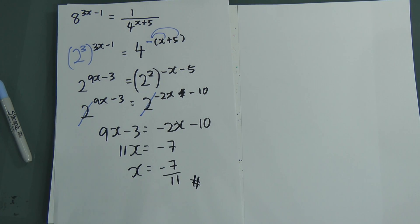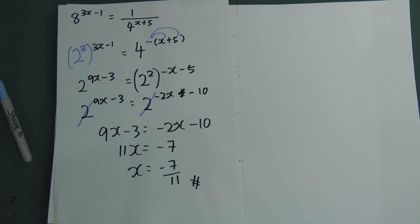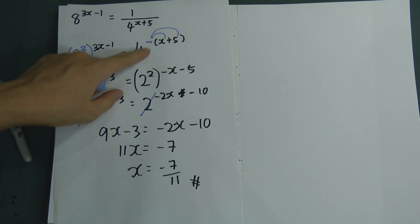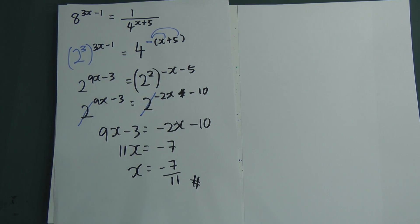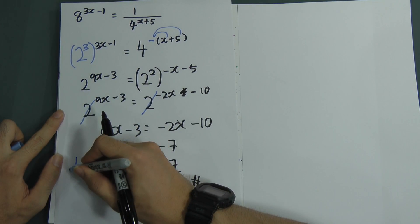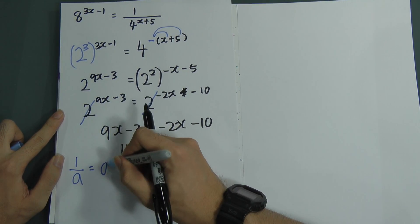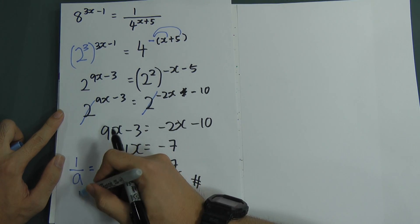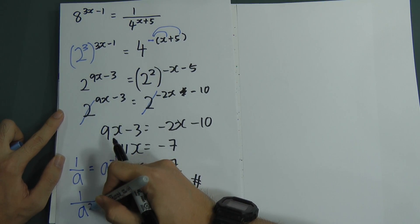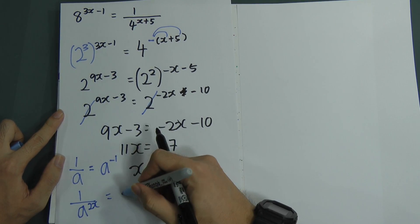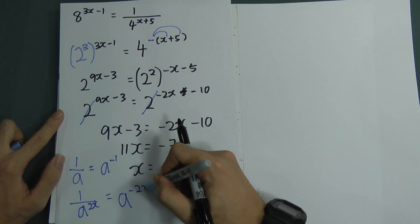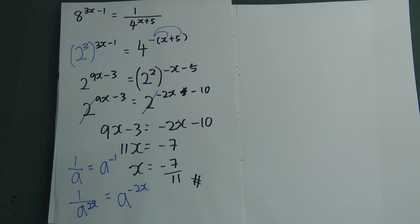Done. This one is very simple, but you must understand the rule. This rule tells us that we get a negative exponent from 1 over something. For example, you got 1 over a — we can write this as a to the power of negative 1. If you got 1 over a to the power of 2x, we can write that as a to the power of negative 2x. You must understand this rule, then you can solve this kind of question easily. So, last example for this video.